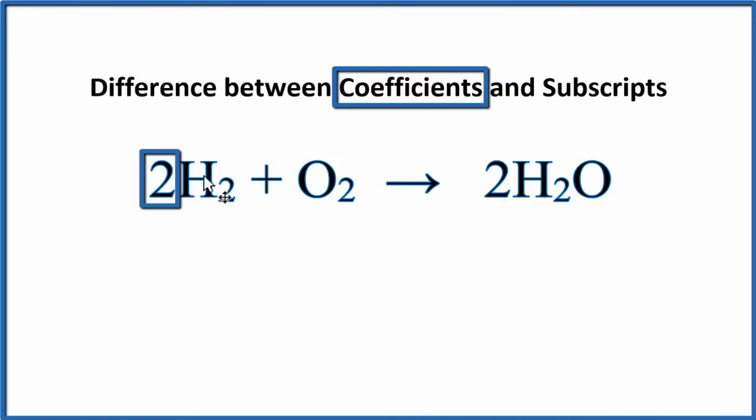Here we have a 2, it's in front of the H2, or the 2 in front of the H2O. And this 2, this coefficient, they apply to all of the elements, the H's and the O here. If we don't have a coefficient, like with the O2, we assume that to be 1.